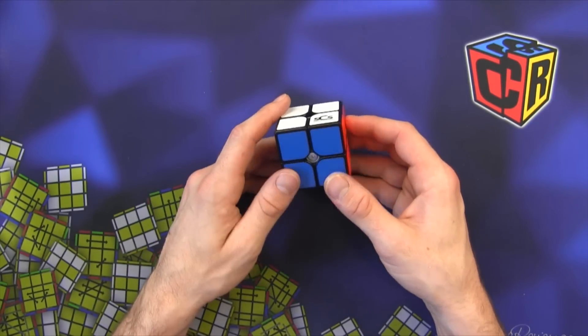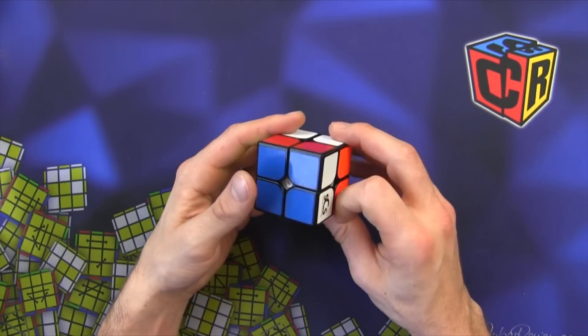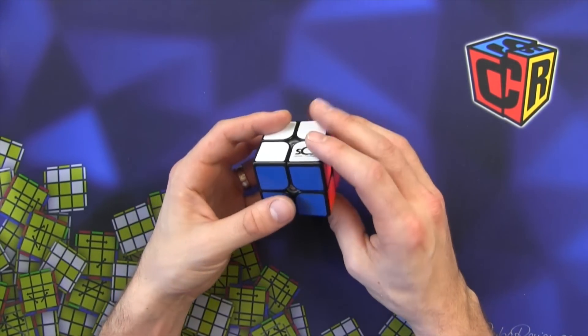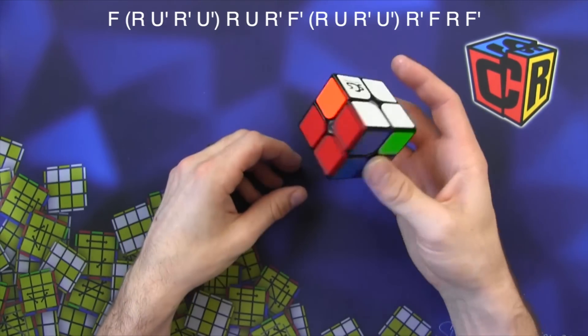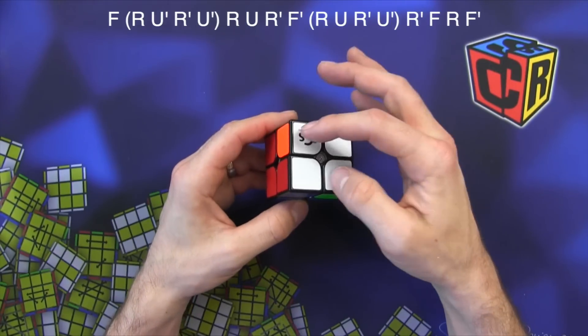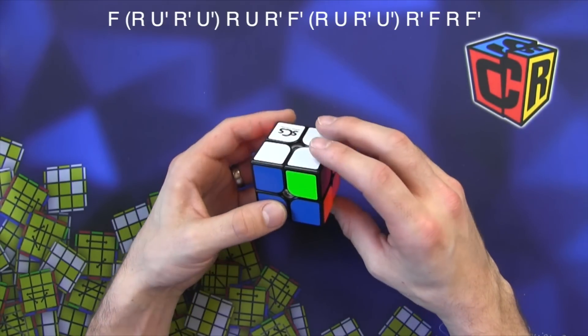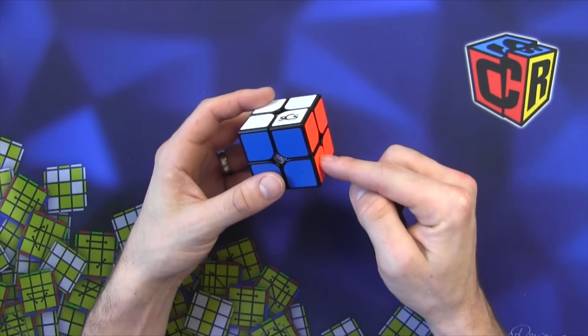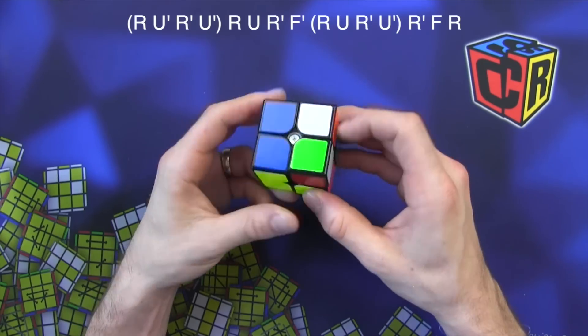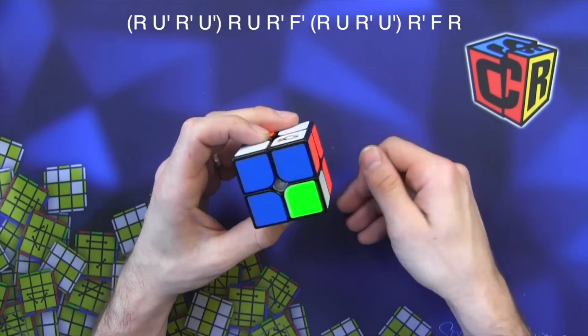So basically the way it works is you do a Y permutation but without the F or F prime moves. So if you did F it looks something like that where you swap these two corners but instead of doing that we just avoid any F moves and it ends up swapping this. So you don't do the F at the beginning or the F prime at the end.